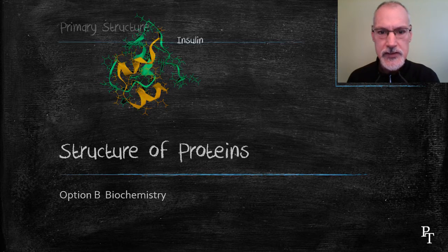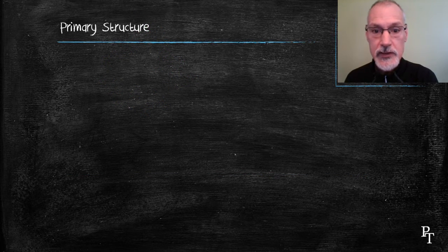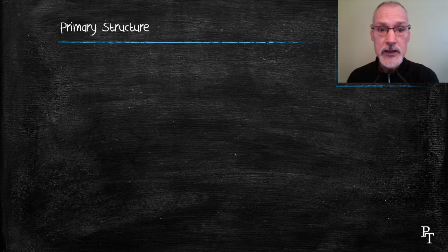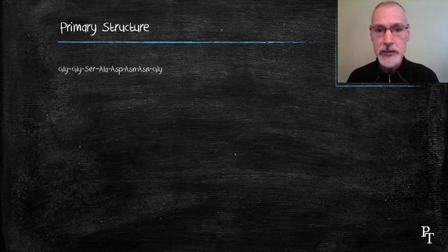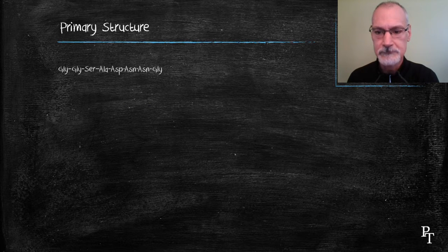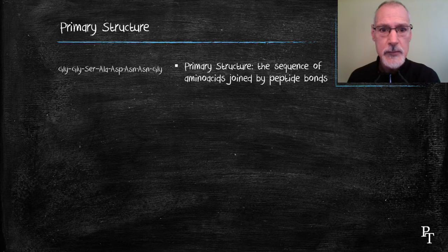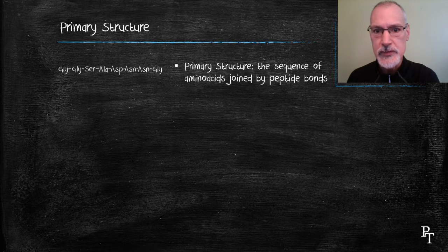Let's begin with what we call primary structure. Primary structure simply refers to the sequence of amino acids that we have in a particular polypeptide or protein chain. There are some 20 amino acids from which to choose to put that together.